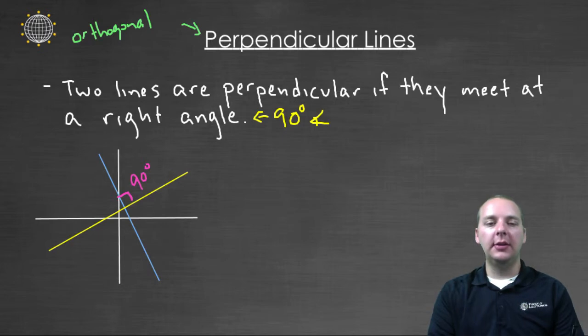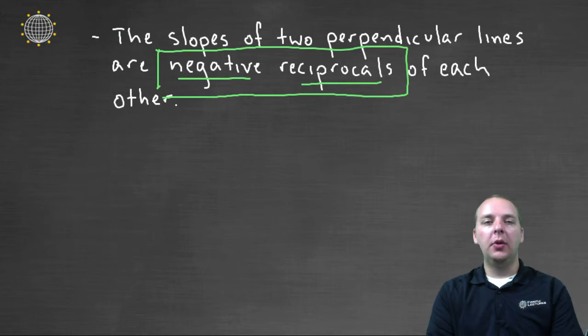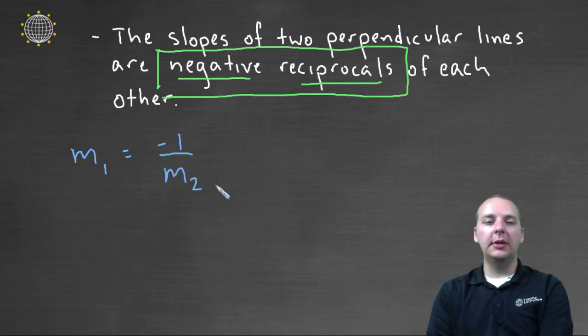Let me come back over here to these two lines. Let's say the blue line has a slope of, we'll call it M-one, slope one, slope of the first line. And the yellow line, let's say it has a slope of M-two. So what's the relationship between M-one and M-two to prove that these guys really do meet at a right angle? Well it says the slopes are negative reciprocals of each other. Here's what that looks like. Your slope M-one will be equal to negative one over M-two.